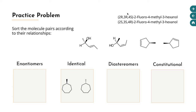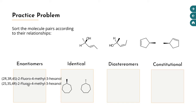Next, we just have some names. The first is 2R,3R,4S-2-fluoro-4-methyl-3-hexanol. The next one is 2S,3S,4R-2-fluoro-4-methyl-3-hexanol. The root name is the same — the fluoro, the methyl, and the alcohol are all on the same carbons in each case. We don't even need to draw this molecule. The first one is 2R,3R,4S and the second one is 2S,3S,4R — so all three configurations have been swapped. When you swap all chirality centers, you generate the enantiomer. So we'll move that one to the enantiomers box.